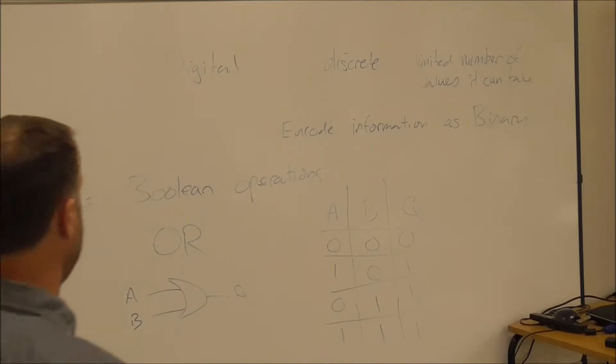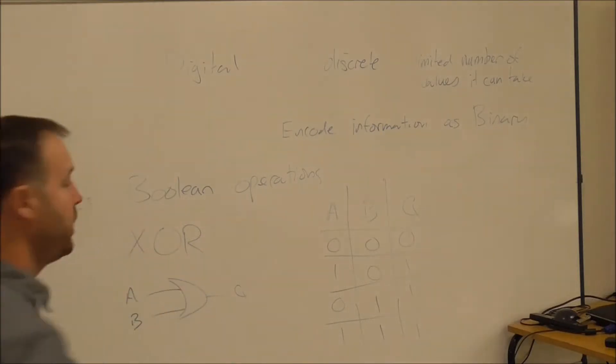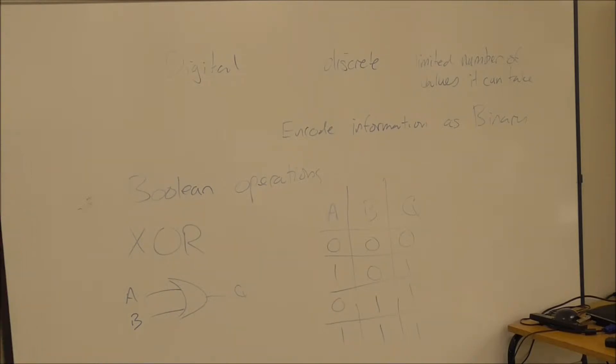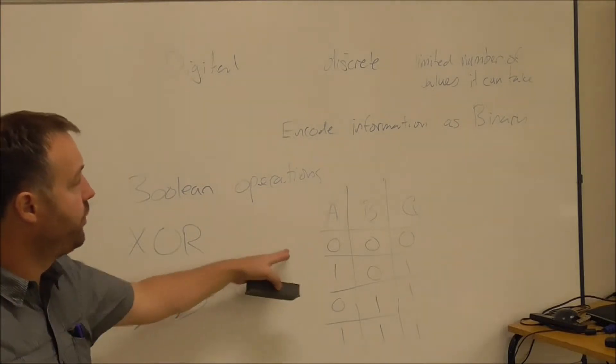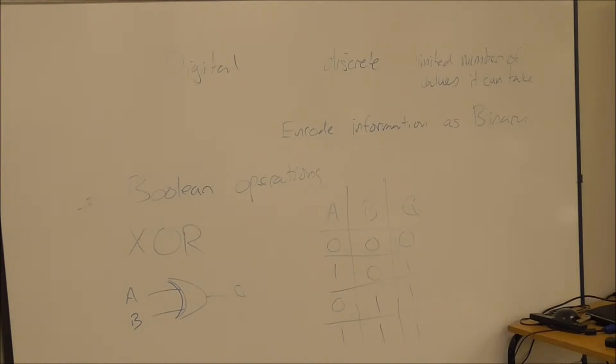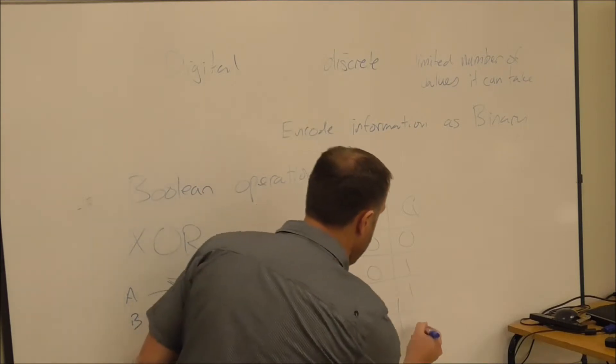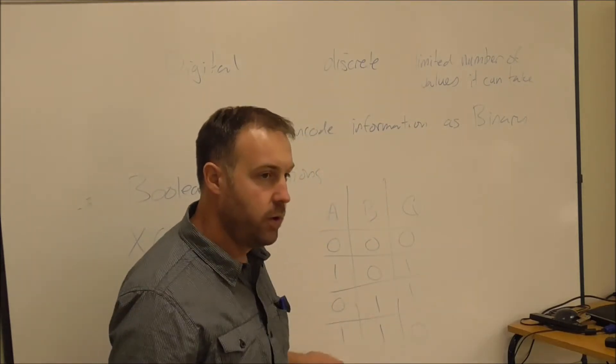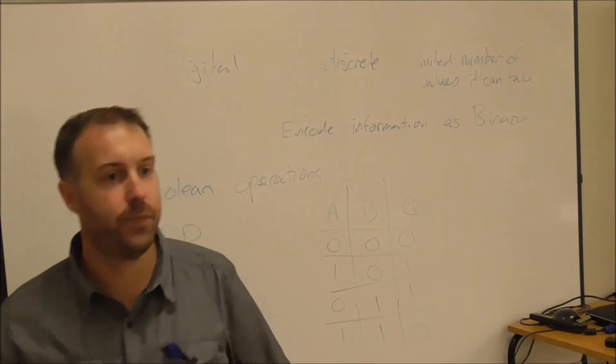Now the other version is something called an XOR. XOR is exclusive OR, and its symbol is very similar to the OR gate, except you've got an extra line on the input side. However, its truth table, its function, its operation, is a little bit different. So basically what XOR means is exclusive. If one or the other is true, then the output is true, but not if both are true. So the only difference between the XOR and the OR is when they're both logic 1, the output is zero.